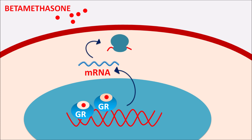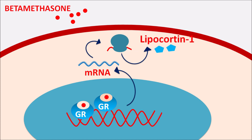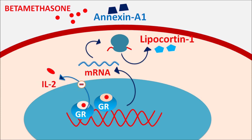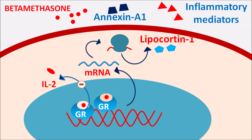This gene transcription is followed by protein synthesis, producing proteins such as lipocortin 1 and annexin A1. These proteins control the inflammatory cascade, thereby reducing inflammatory gene transcription. Similarly, betamethasone can inhibit the release of IL-2, one of the important mediators that increases immune response — that is why betamethasone also acts as an immunosuppressant.